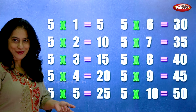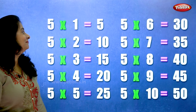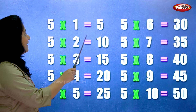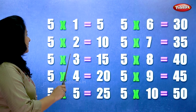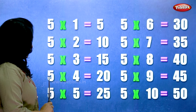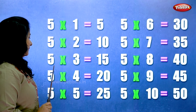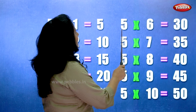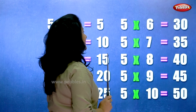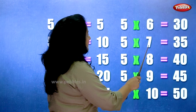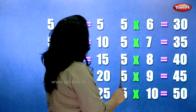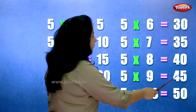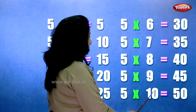Let's learn the table of five one more time. Five ones are five. Five twos are ten. Five threes are fifteen. Five fours are twenty. Five fives are twenty-five. Five sixes are thirty. Five sevens are thirty-five. Five eights are forty. Five nines are forty-five. Five tens are fifty.